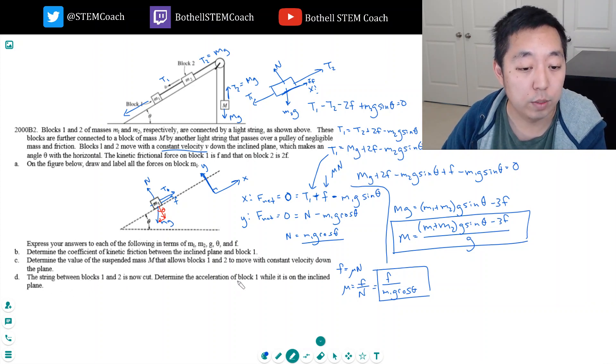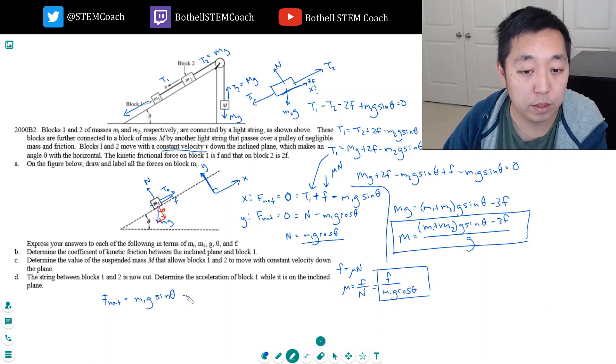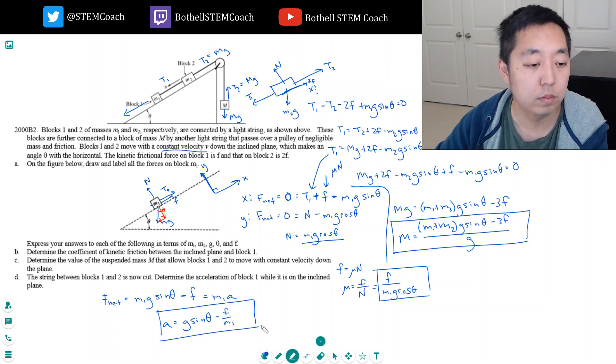Part D: The string between block 1 and 2 is now cut. Determine the acceleration of block 1 while it's on the incline plane. So now I've cut T1. So my net force in the X direction, I got M1G sine theta, and then I still have friction fighting me minus friction. But then I no longer have T1. So that's it. That has to equal M1 times A. So the acceleration is equal to G sine theta minus F over M1.